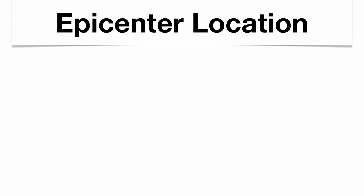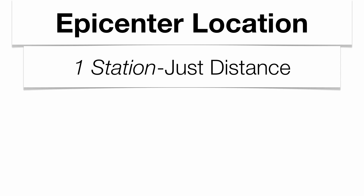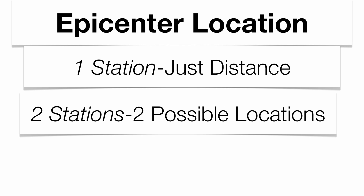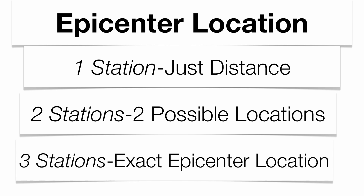Epicenter locations can be very important to us. The magic number here is three. Whenever you have to draw your epicenter circles, you need a minimum of three seismic stations to figure out exactly where the earthquake occurs. One station just gives you distance. Two stations will give you two possible locations where the earthquake occurs. Three stations will give you the exact location, because you want to look where all three circles intersect.